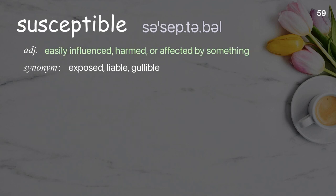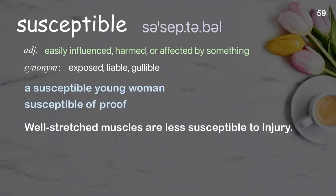Susceptible: easily influenced, harmed, or affected by something. Examples: a susceptible young woman, susceptible of proof. Well-stretched muscles are less susceptible to injury.